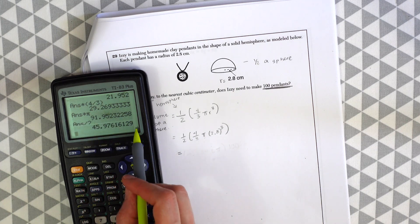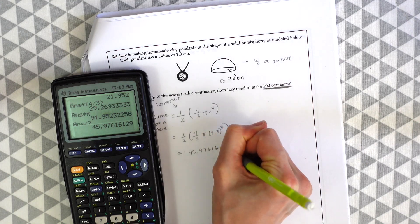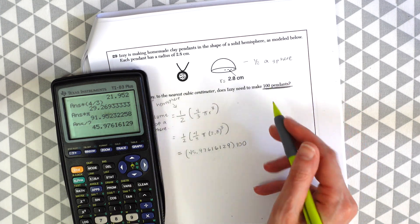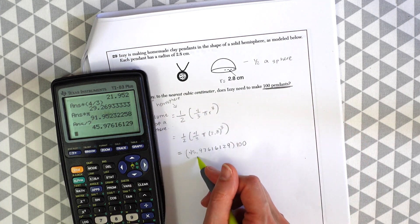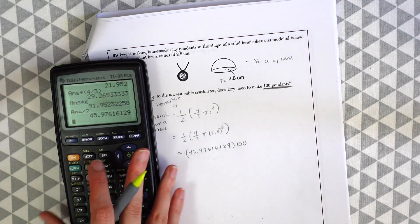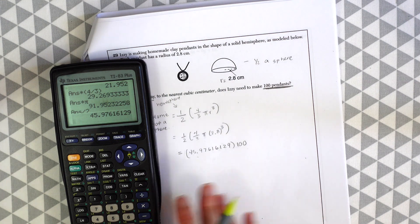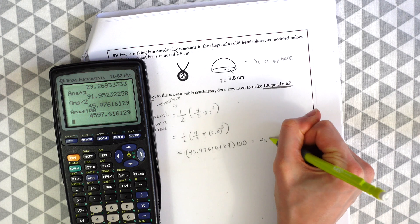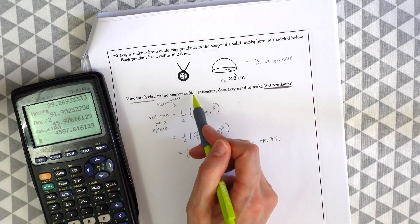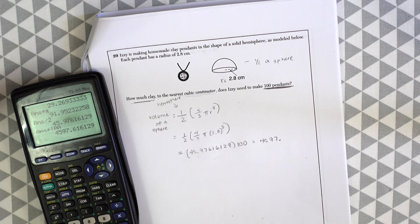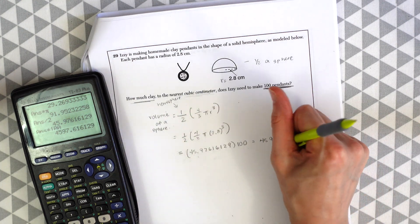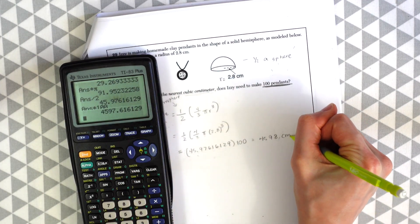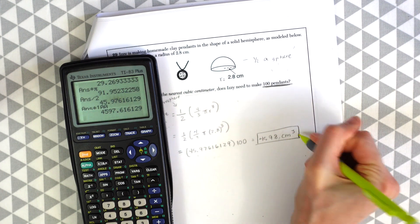And then divided by 2. So we get this big long number. But before we get too excited thinking we have our answer, don't forget that we need enough clay for 100 pendants. Because right now this is really enough clay for one pendant. So we need 100 pendants, right? So we're just gonna multiply this whole thing times 100, which will give us 4597 point... So it wants the cubic centimeter. So that just means the closest whole number. So we're actually gonna be rounding up to 8. So 4598 centimeters cubed. And that's our answer.